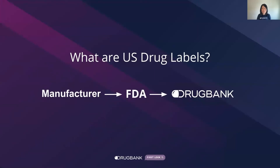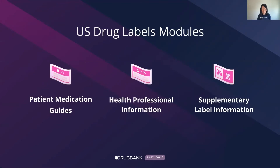You might know drug labels as the drug facts table on your medication package or the prescribing information in a product monograph. This information is created by the manufacturer and approved by the FDA. However, drug label information can be overwhelming and unorganized, making it difficult to find relevant information quickly.